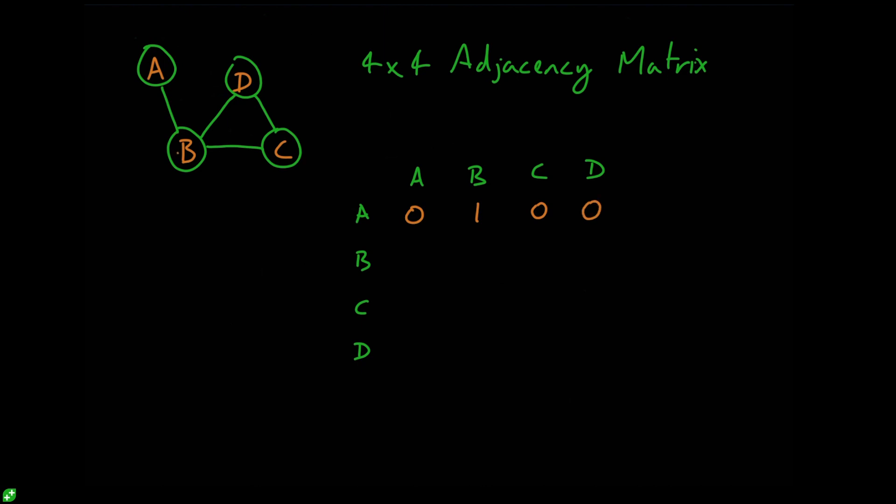Next we look at node B. Well, node B is connected to A, so we can place a one in there as well. B is not connected to itself, but it is connected to C and D. We then move over to node C. Node C is not connected to A, it is connected to B and D, and it's not connected to itself. And then finally node D is not connected to A or itself, but it is connected to B and C. So this is our adjacency matrix. And hopefully you can see why this might be useful to store our graph data in this way.